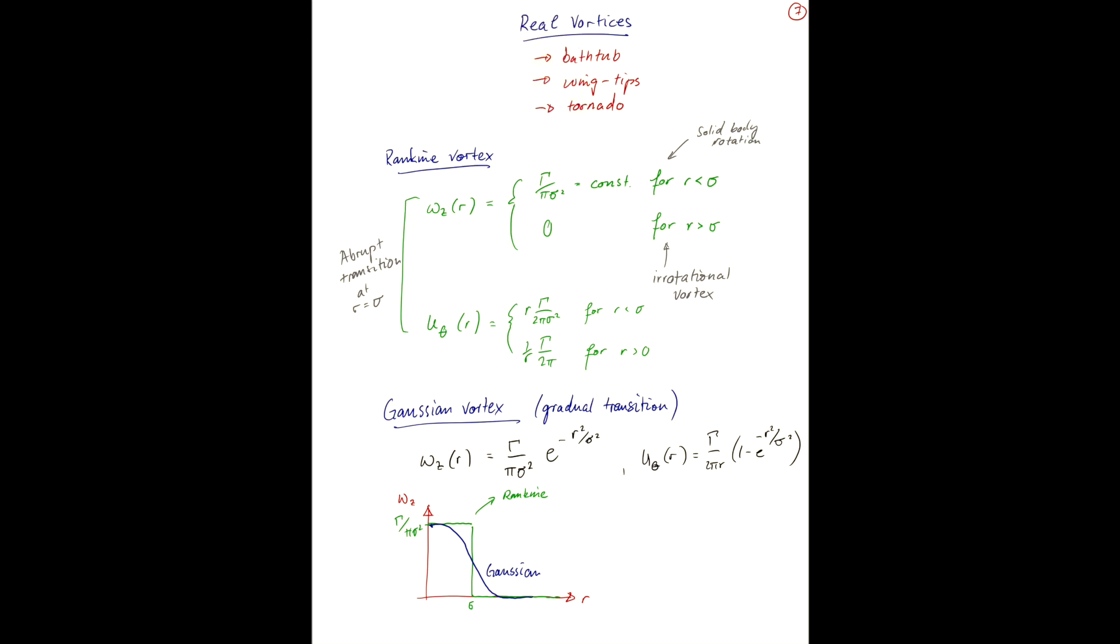Finally, if we look at the velocity fields for these two types of vortices, we have u theta of r as a function of r. For the Rankine vortex, you have a linear increasing velocity up to your point sigma, and then an inversely decaying one down here.